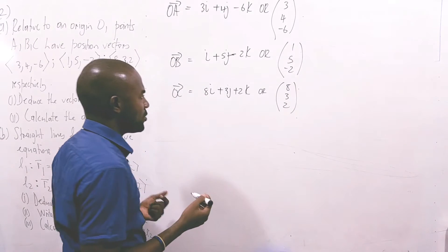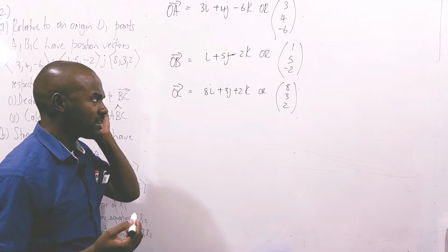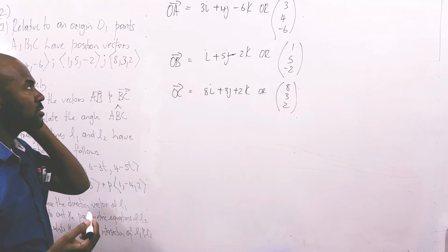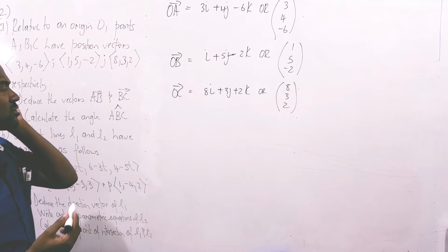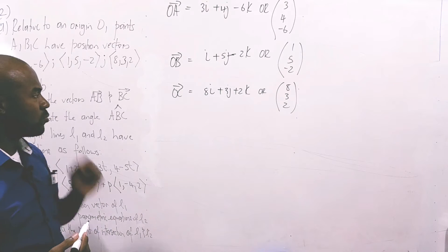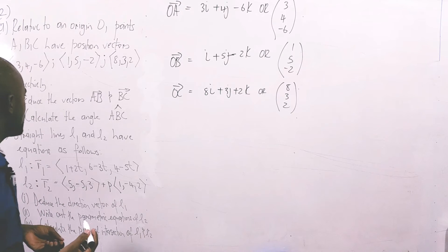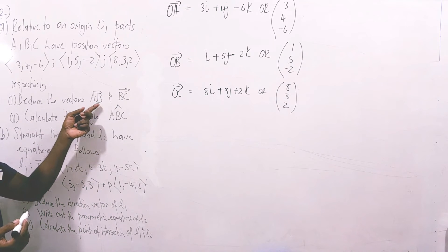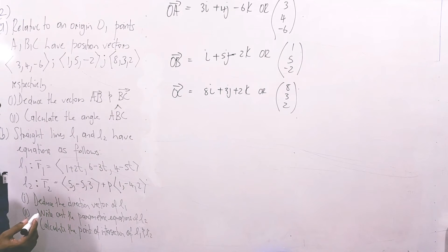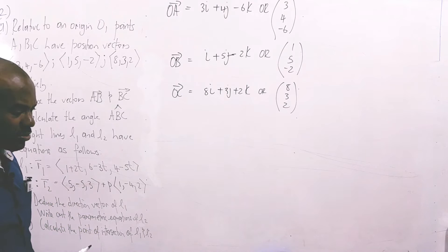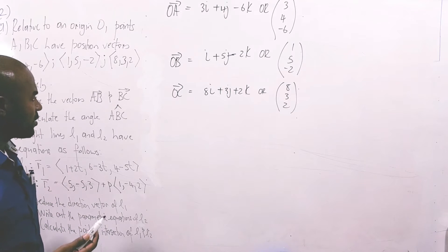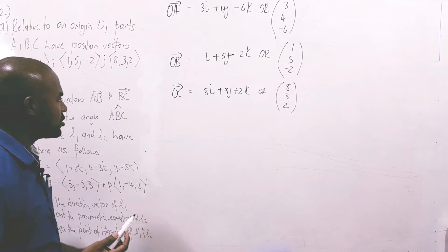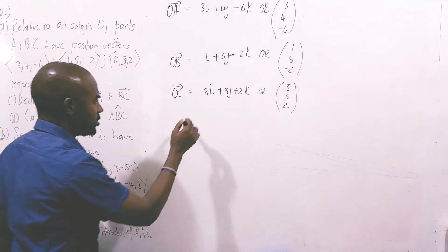Whichever way you're more comfortable with in expressing the vectors, you can stick to that. So we have our position vectors OA, OB, and OC, and we're asked to find vectors AB and BC, which are displacement vectors. Before finding AB and BC, I'll draw a little vector diagram.